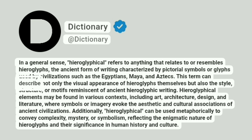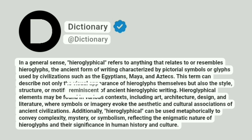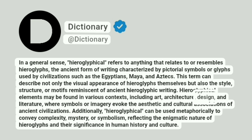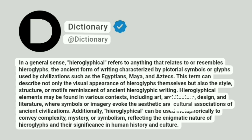This term can describe not only the visual appearance of hieroglyphs themselves but also the style, structure, or motifs reminiscent of ancient hieroglyphic writing. Hieroglyphical elements may be found in various contexts, including art, architecture, design, and literature, where symbols or imagery evoke the aesthetic and cultural associations of ancient civilizations.